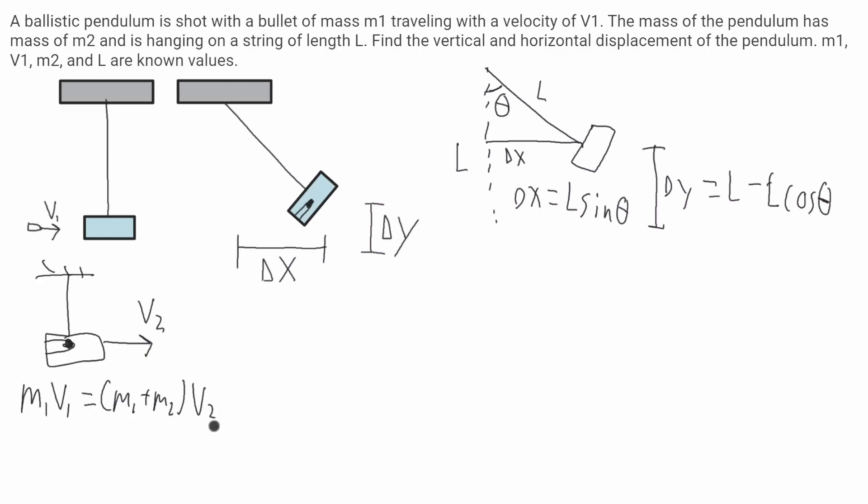So solving for v2 because it's what I don't know, v2 will be equal to m1 v1 over m1 plus m2.